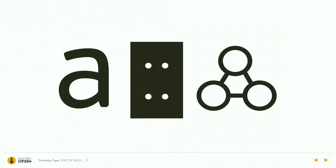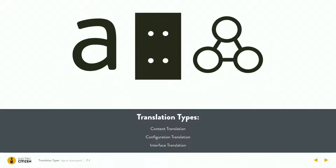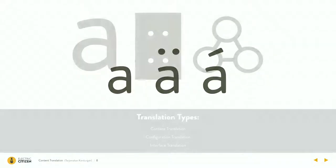So we've got our languages in, and now we need to do different translation types. As you probably figured out from the modules, content translation is for editors, configuration translation is for site builders, and interface translation is more for front-end devs and back-end people. They're three very distinct sections.